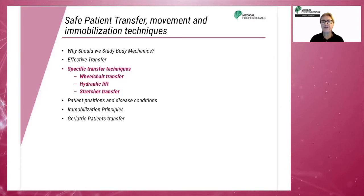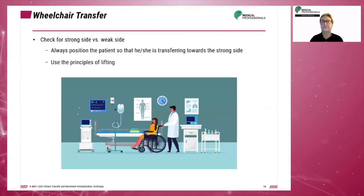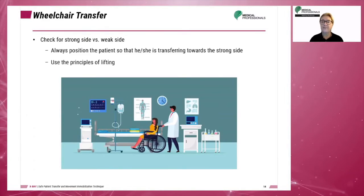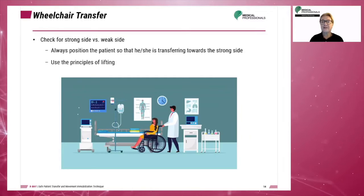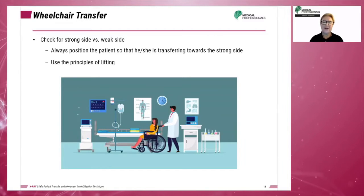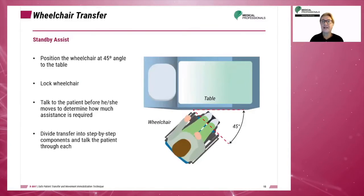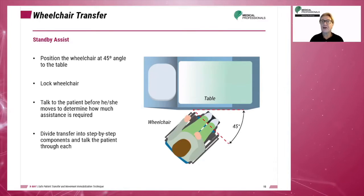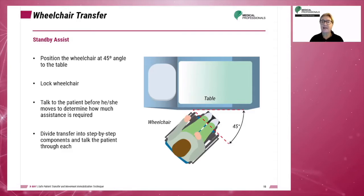Now let's explain the specific transfer techniques, including the wheelchair transfer, hydraulic lift, and stretcher transfer. Before starting a wheelchair transfer, find out if the patient has a strong or weak side. Always position the patient so that they are transferred towards the strong side, meaning the strong side should be closest to the x-ray table. The stand-by assist transfer works under the assumption that the patient is weight-bearing. Position the wheelchair at a 45-degree angle to the table, then lock the wheelchair. Communication is key — the technologist must determine exactly how much assistance the patient will need.